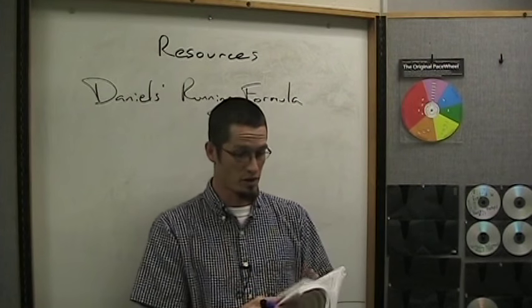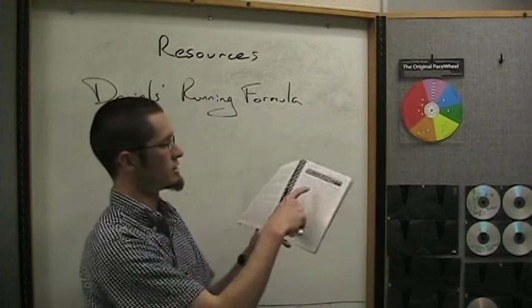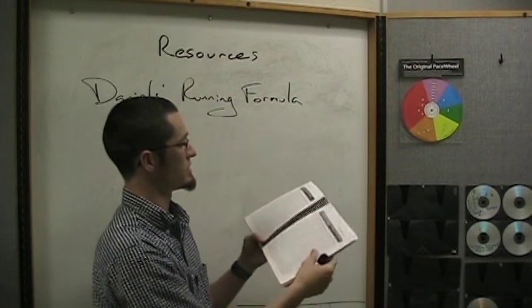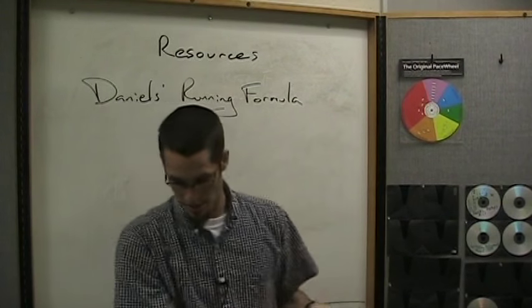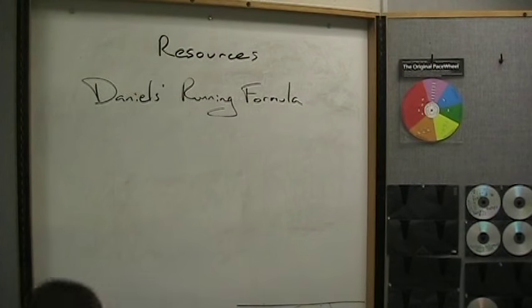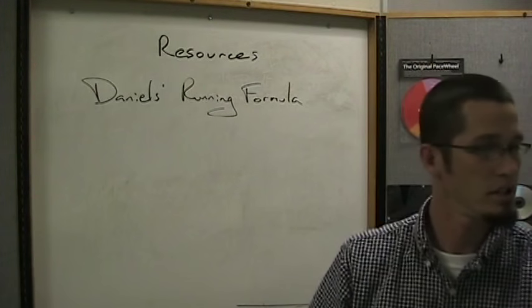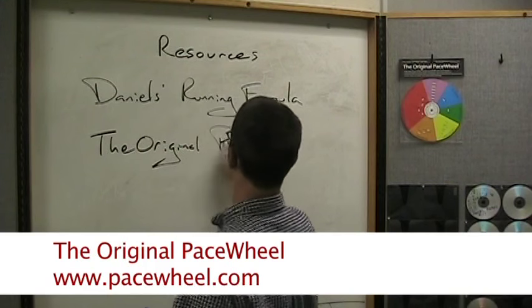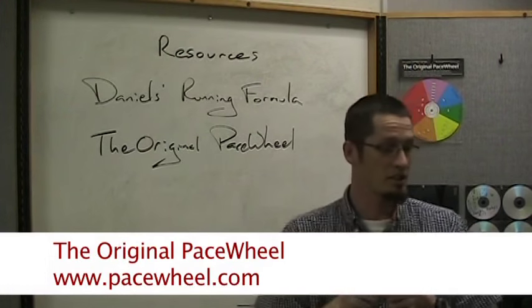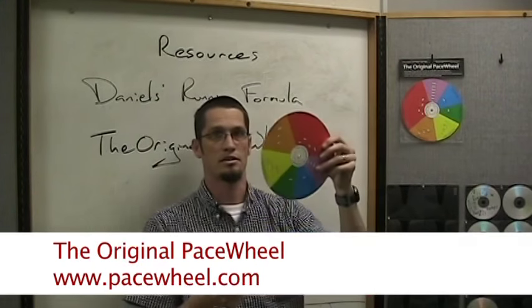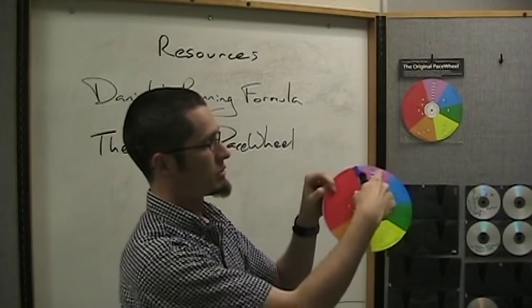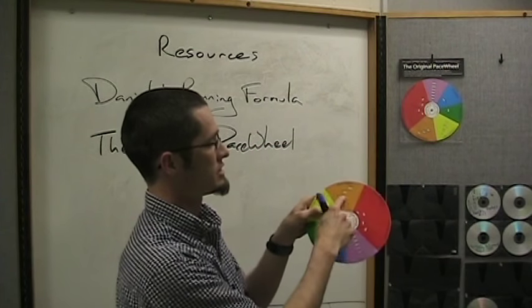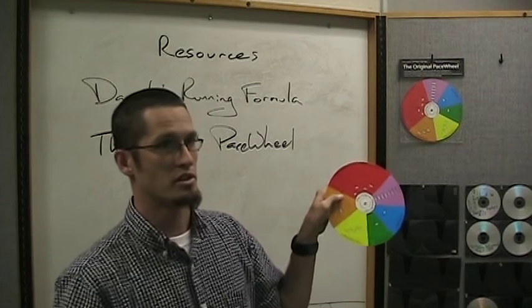Daniels has charts so you don't have to calculate all that stuff yourself — you just look up your athlete's race time, identify the fitness level number, and then flip to the other page showing how fast they should train for each training pace. If you don't want to calculate training paces yourself, you can get the original pace wheel — it's something I actually invented for my cross country team. It's a circular calculator: you line up your kid's time in the purple windows and it calculates all five paces — aerobic training pace, marathon race pace, lactate threshold pace, VO2 max pace, and running economy repetitions. You can order it at pacewheel.com.